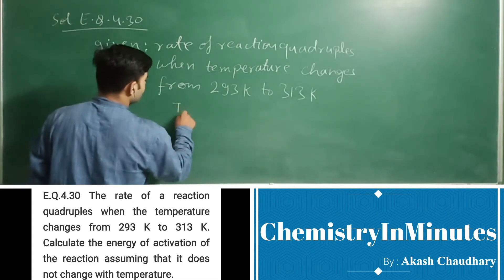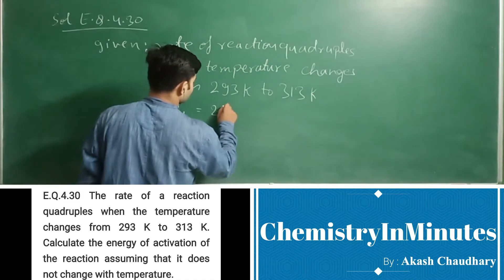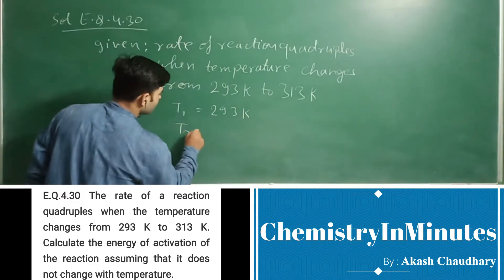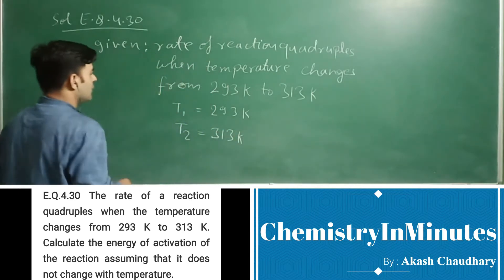T1 equals 293K, T2 equals 313K. And we have given,